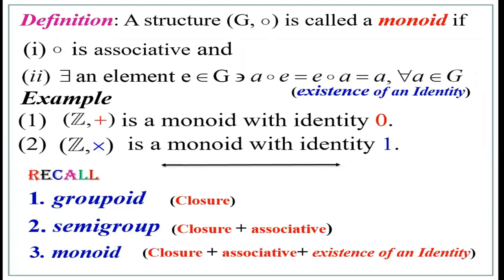So far, we have learned what is a binary operation and examples of binary operations, and the definitions of closure property, associativity, identity, and inverse. Then groupoid, semi-group, monoid. The final stage is the actual definition — namely, the definition of a group.